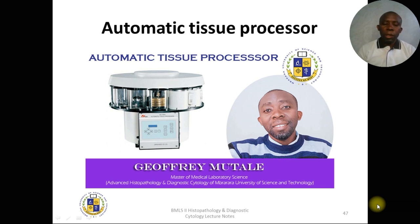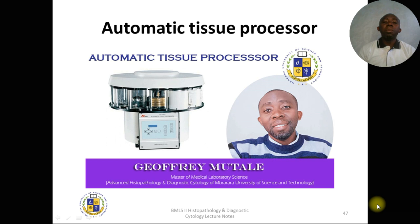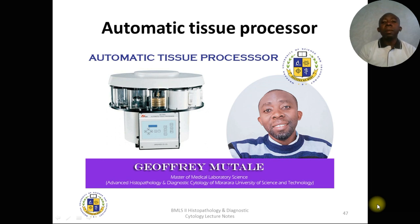Today we want to continue with the automatic tissue processor. Last time we went through the first steps — we talked about fixation, dehydration, clearing, and embedding. Today we want to continue with tissue processing and look at the automatic tissue processor.